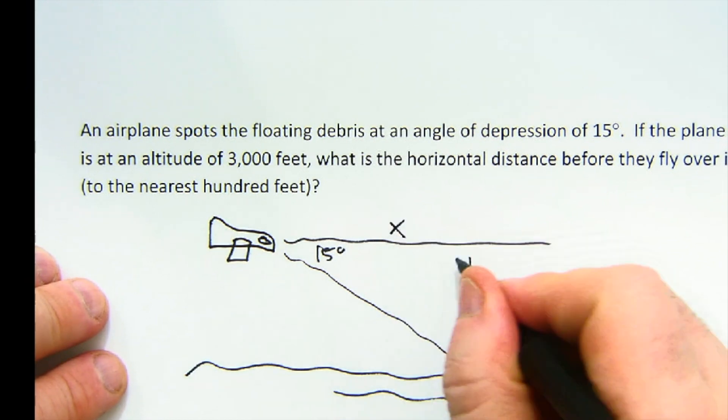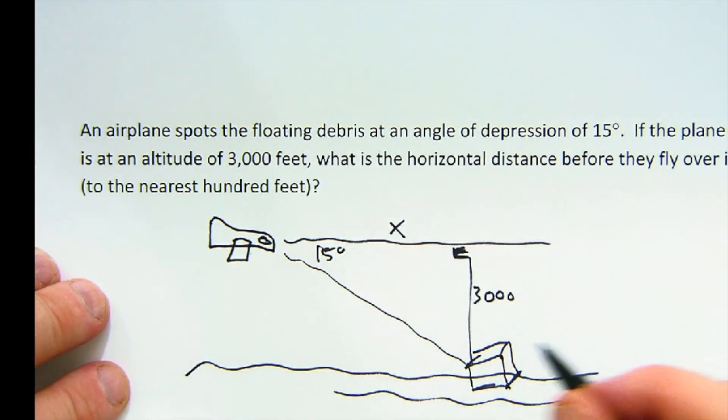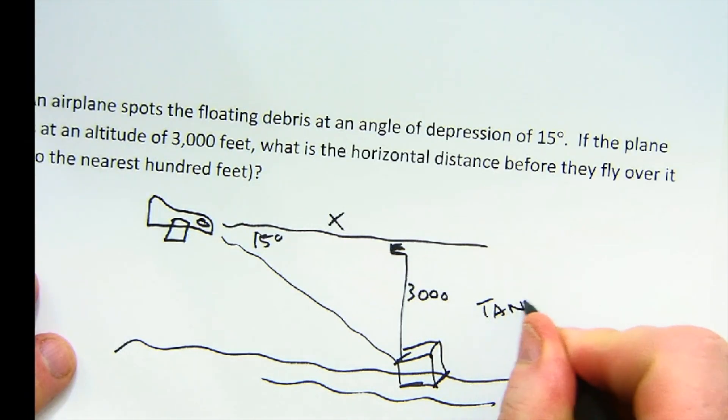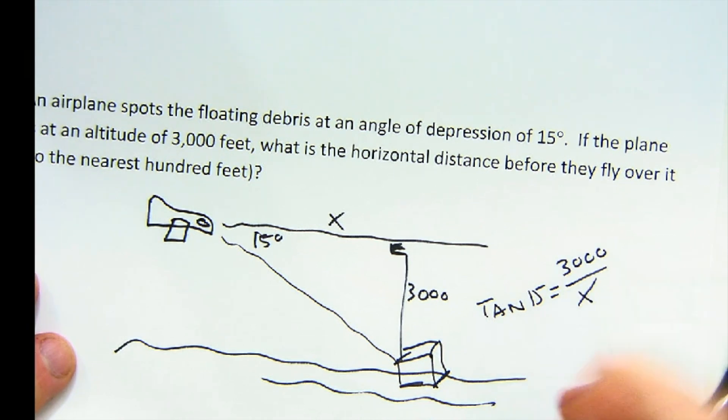That's the height it's at. What's the horizontal distance right here? Horizontal distance. So, this is a tangent question. Tangent of 15 is 3,000 over x. And that solved that problem. These are a lot of fun. Thank you.